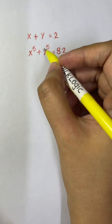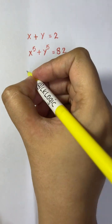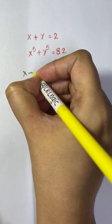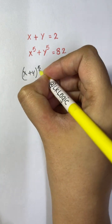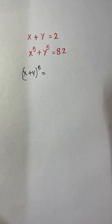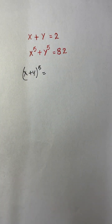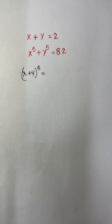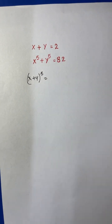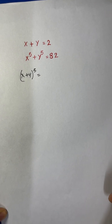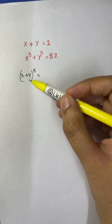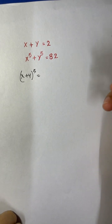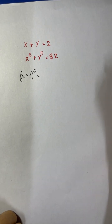The first method is expanding (x+y) whole to the power of 5 using the binomial theorem.